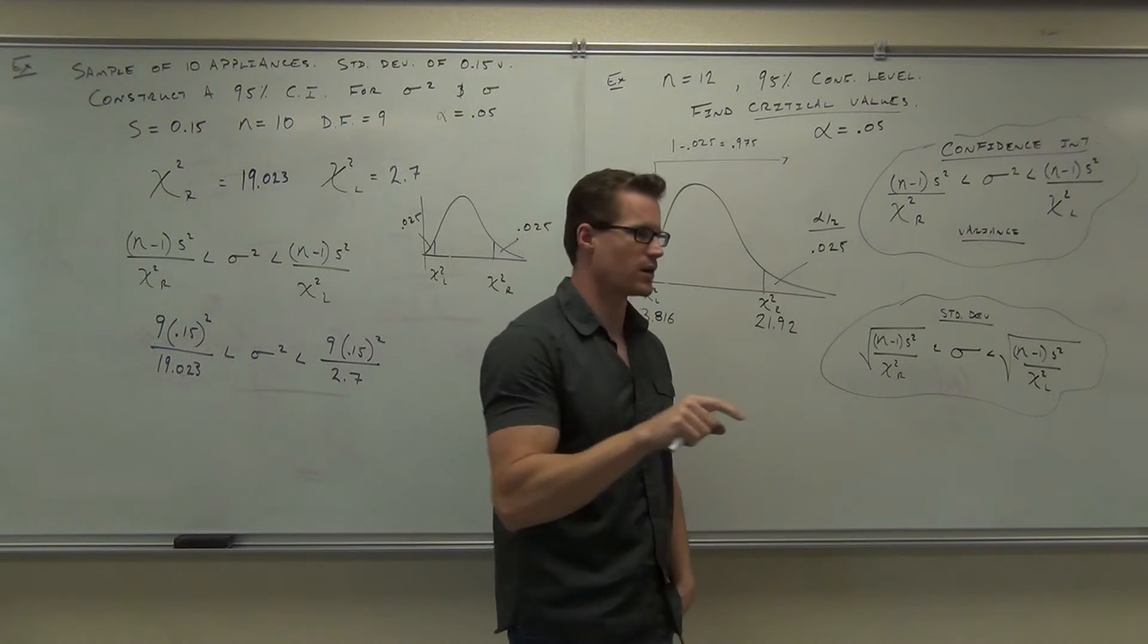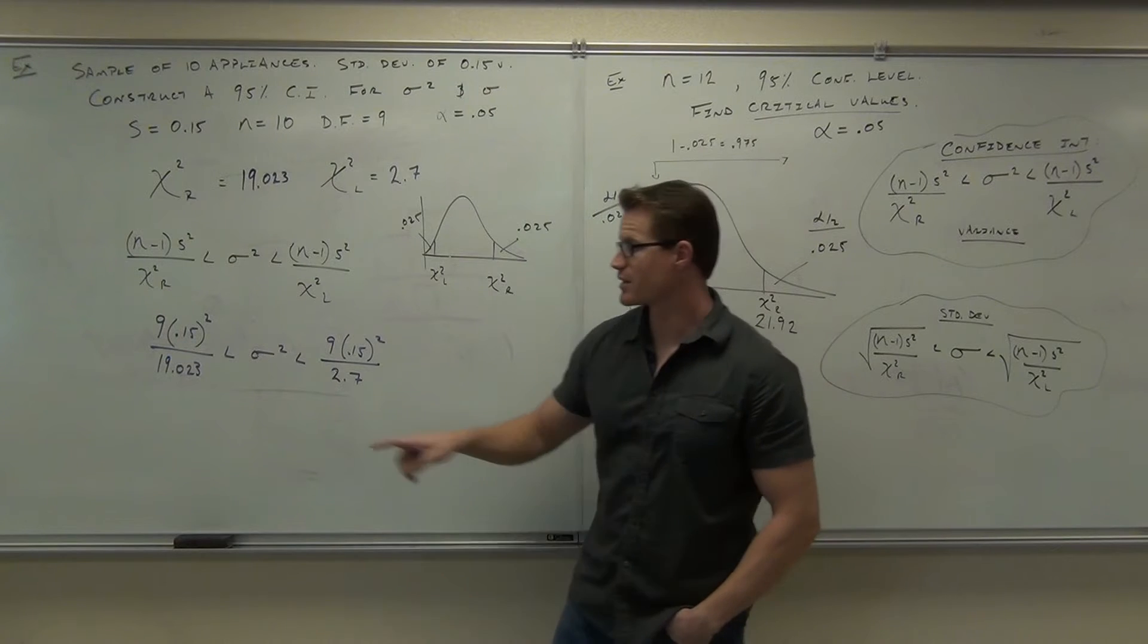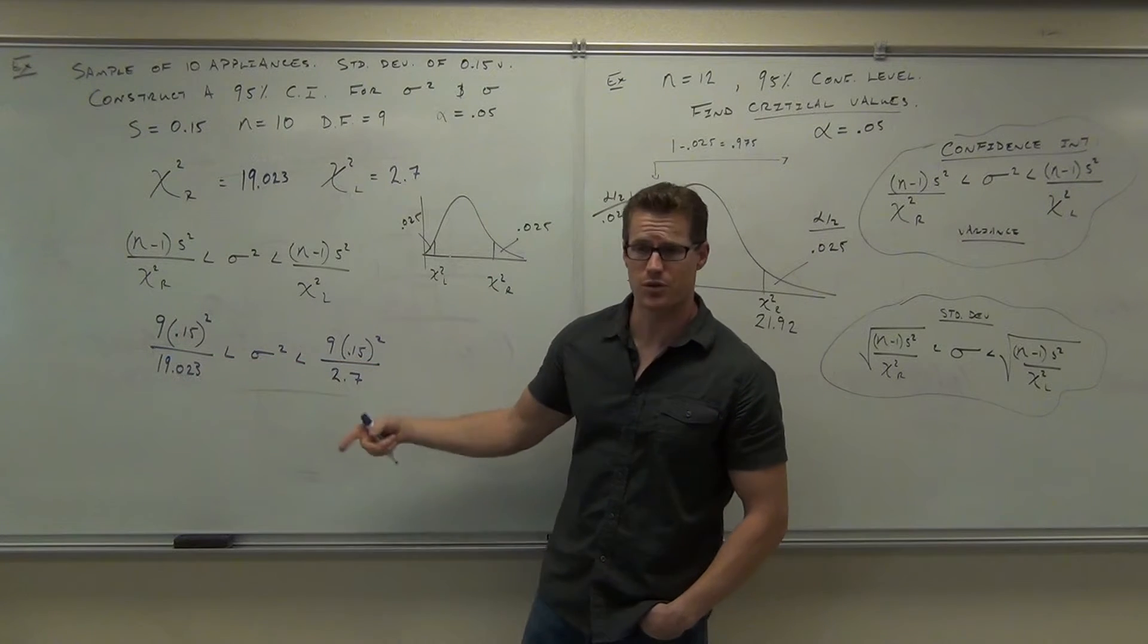So 0.15 squared, enter, times 9, enter, divide by 19.023, enter. That'll give you your left marker. Do the same process for your right marker.